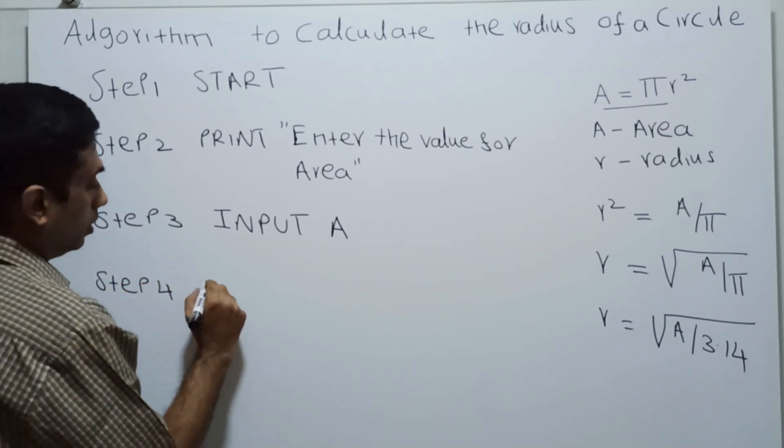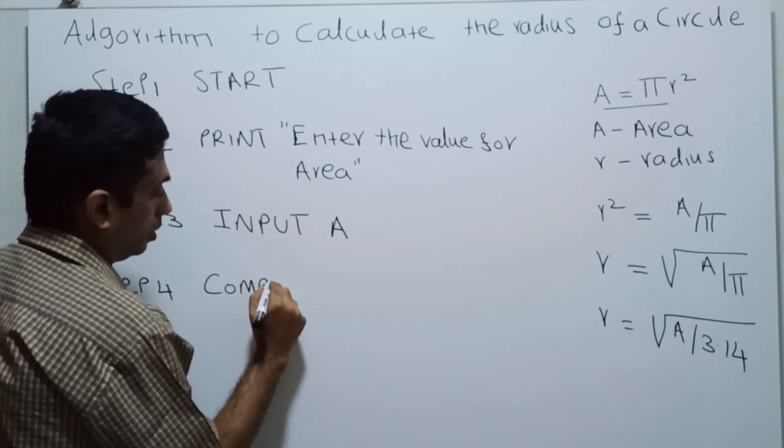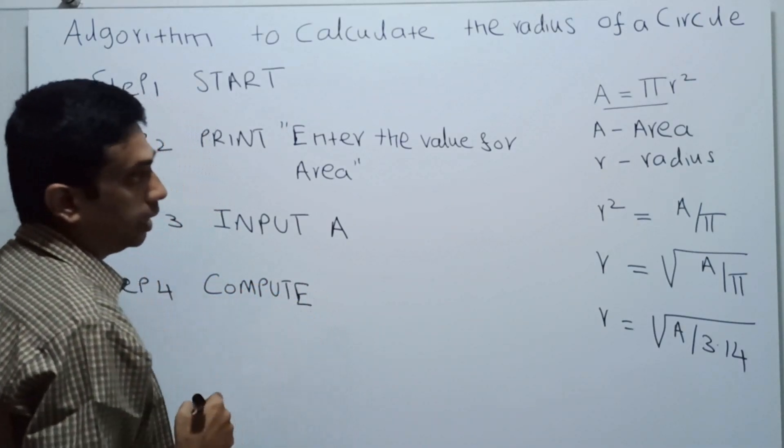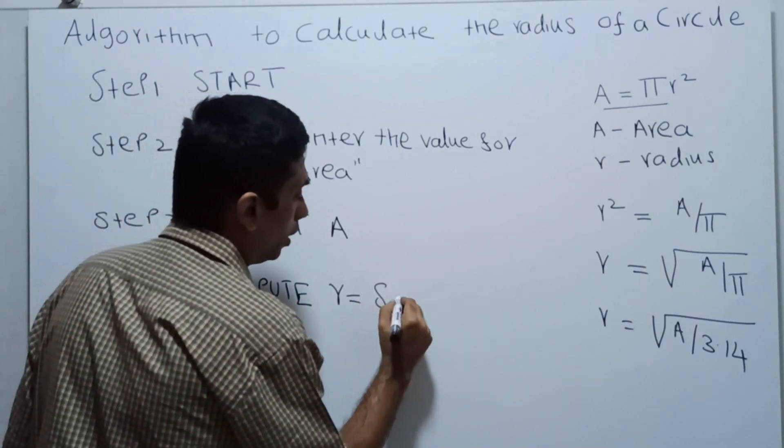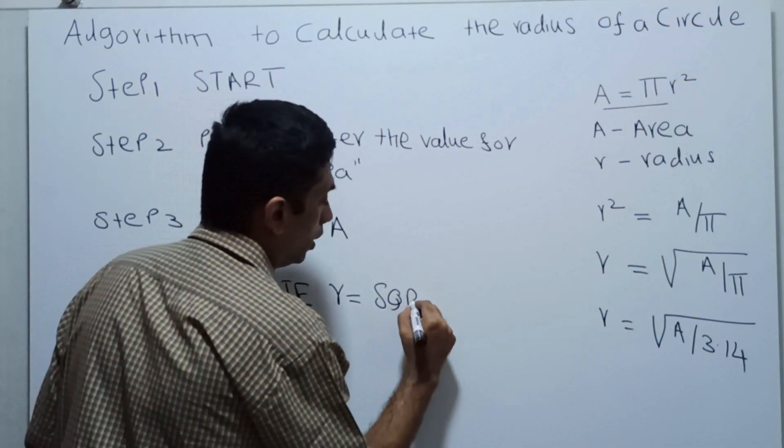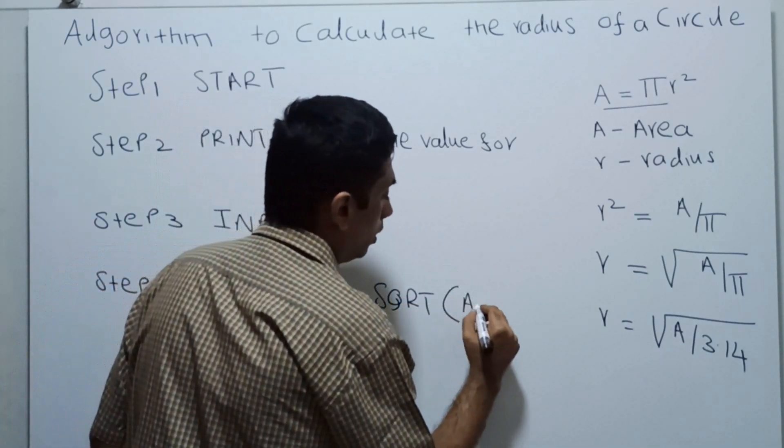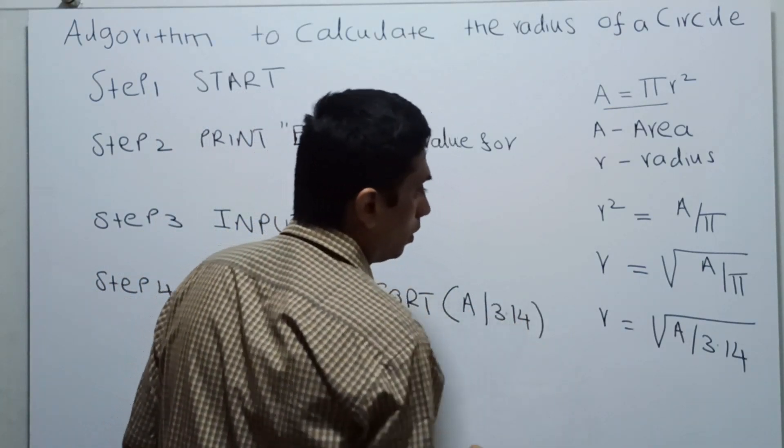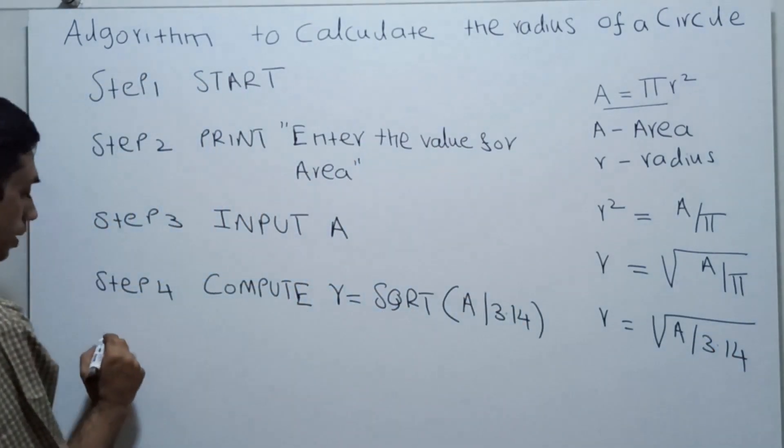Step 4: Compute. The computation or calculation: radius r equal to square root, sqrt is a function for the square root, square root of A divided by 3.14. So the value of pi is 3.14.